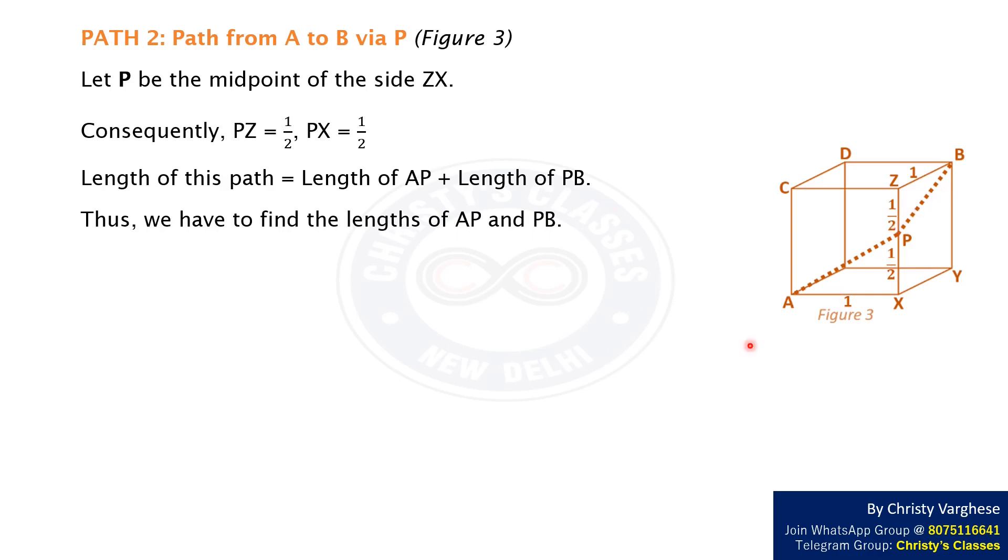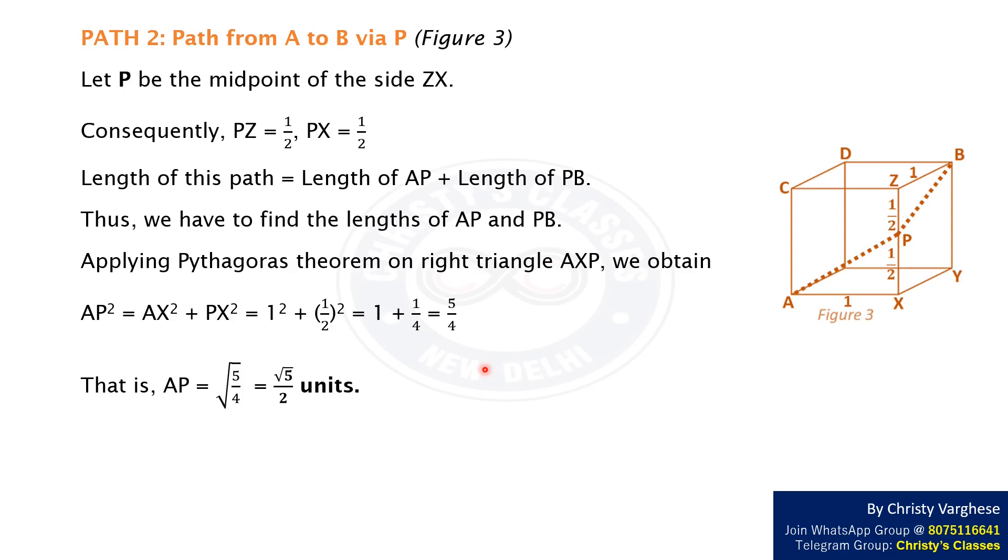Applying Pythagoras theorem on triangle AXP we obtain AP² = AX² + PX², that is 1² + (1/2)² which equals 5/4. That is AP = √(5/4) which equals √5/2 units.